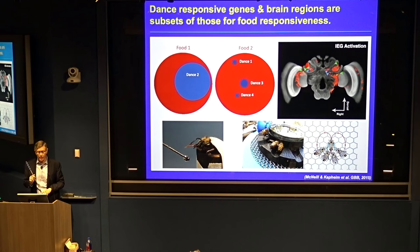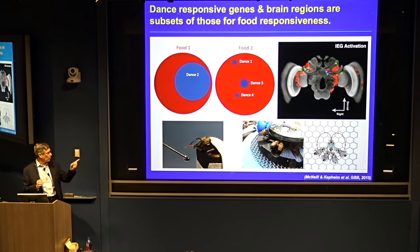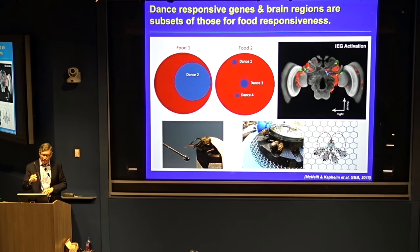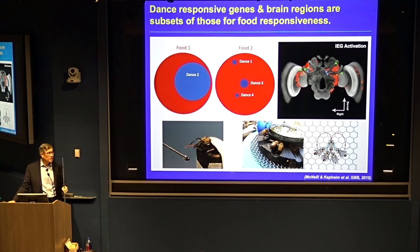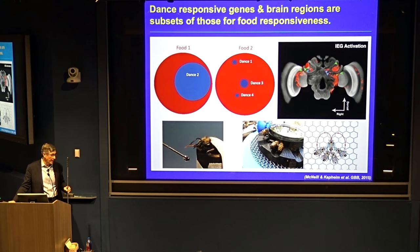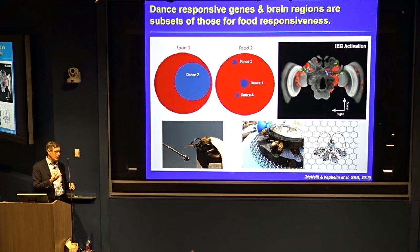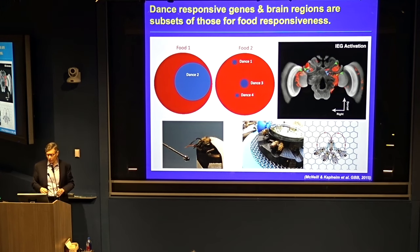Similarly, using immediate early gene activation, massive changes in activity appear across many different sub-parts of the brain in feeding bees, while just a few areas are activated as a function of dance — and they are all subsets within the feeding response. So we have this large 'me' response that is then co-opted as a subset of the selfish feeding response.